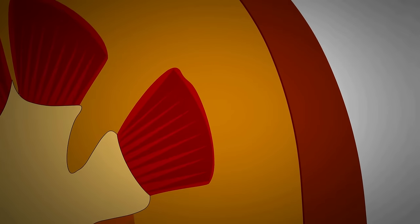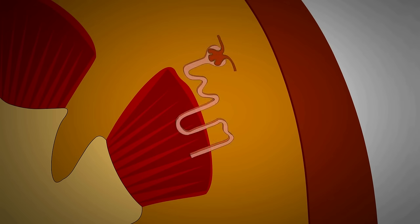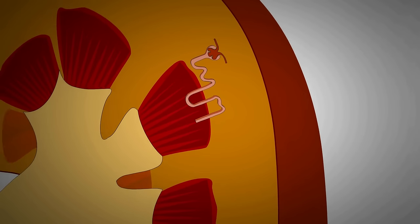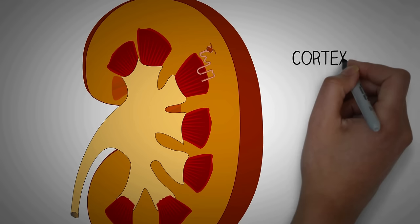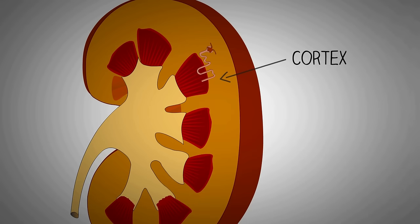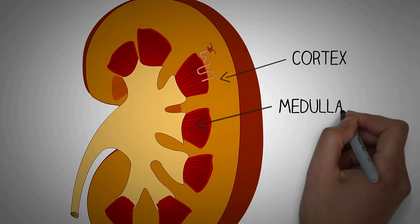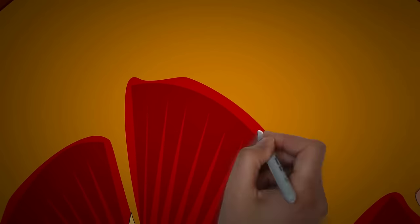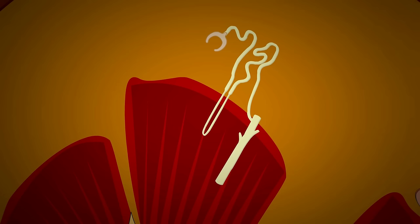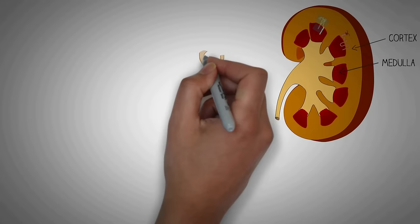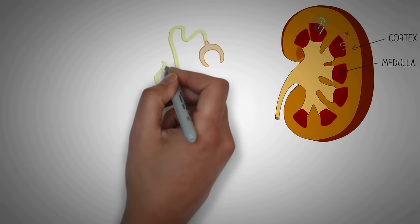Let's first start with the basic structure of a nephron. Nephrons are microscopic structures located in the kidney, which has two important gross regions: an outer cortex and an inner medulla. A part of the nephron is present in the cortex and part is placed in the medulla, which is an important point as it plays a significant role in urine formation.